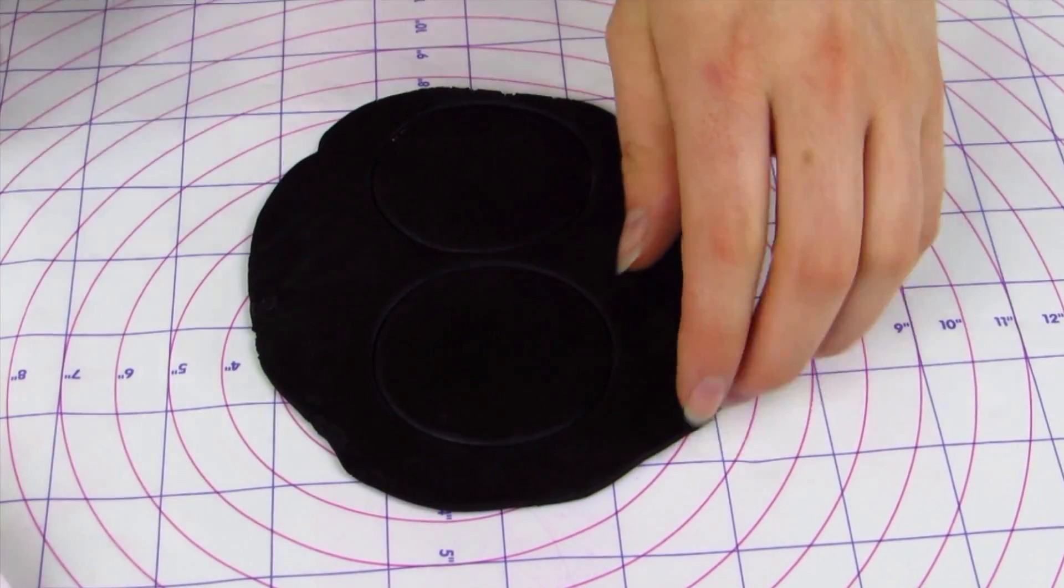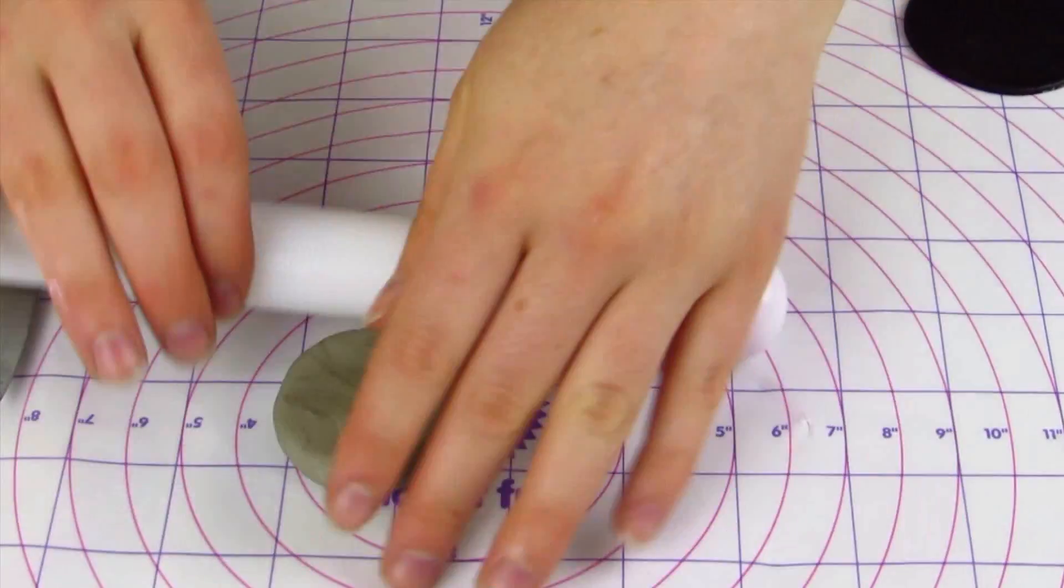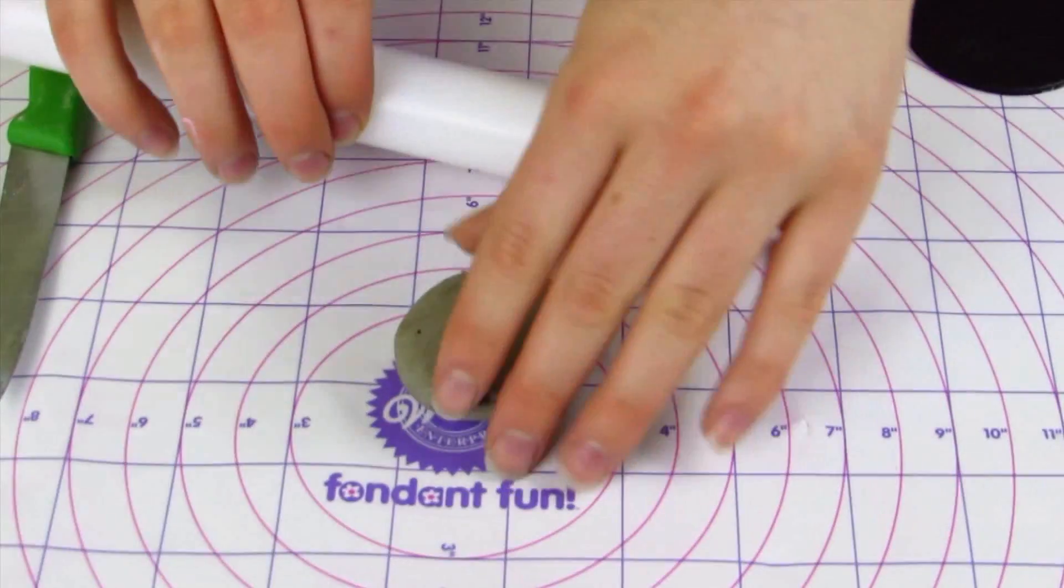You just want to cut out a circle that's going to be big enough to go on top of your cupcake. You can go ahead and set that aside.